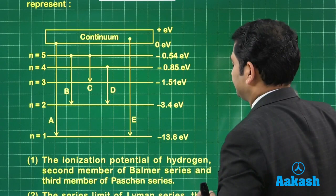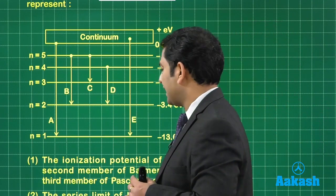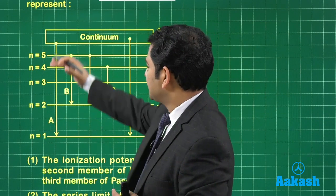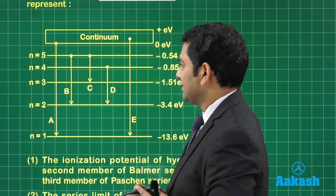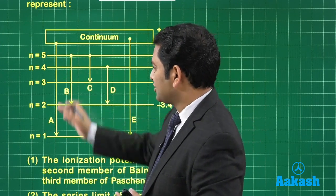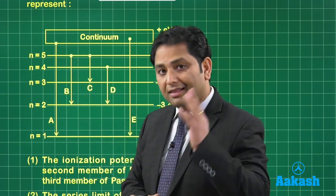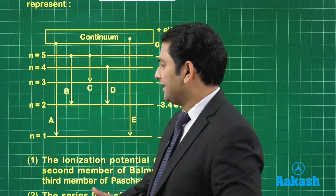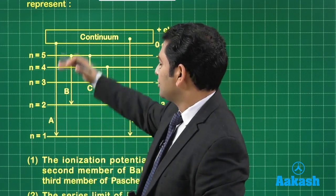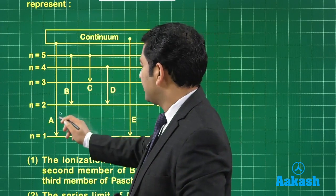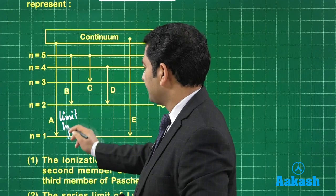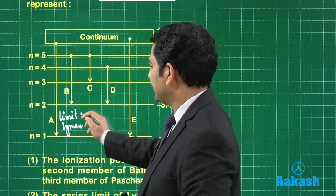What is A? A can be called as the ionization energy corresponding to hydrogen. That's perfectly fine. Or it can also be called as the transition corresponding to Lyman, right? And Lyman starts from one, and it's between one to zero. So this will be the limit member of Lyman. Right? So I can even go with that.